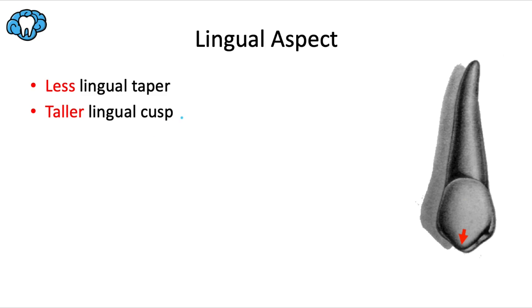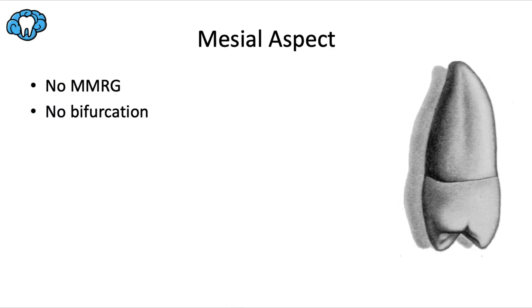Another distinction is that the lingual cusp is now taller than it was in the first premolar — in fact, it's almost as long as the facial cusp. However, it is still angled toward the mesial. From the side view, you can appreciate that the cusps are now closer to the same height. There's not that one millimeter difference we saw with the first premolar, and again there's no mesial concavity, so the crown and root are just super flat.